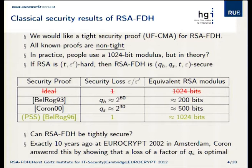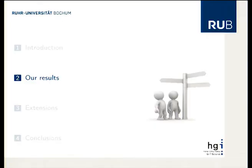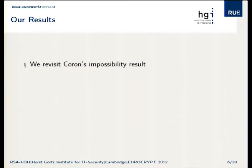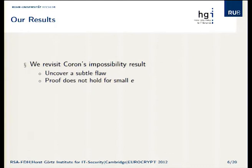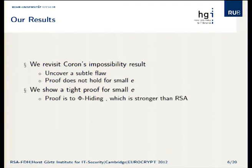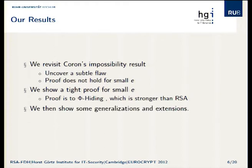So are we basically just flogging a dead horse? Well, not quite. This is where we step in. We revisit this impossibility and optimality result, and it turns out there's a very subtle flaw in the proof: it doesn't hold for small exponents E. So we took a look at small exponents and saw that we could get a tight proof in exactly the area where Coron's proof falls down. The proof reduces to the phi-hiding assumption, which is related to — but stronger than — the RSA assumption. We then do some generalizations and extensions.